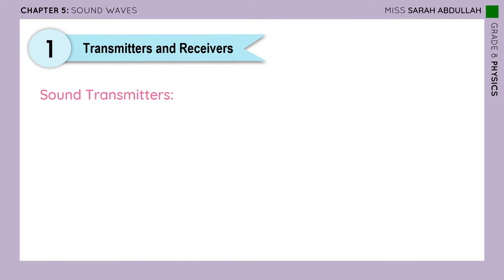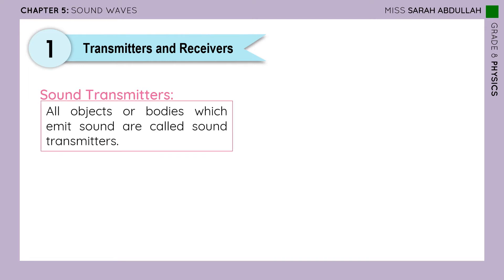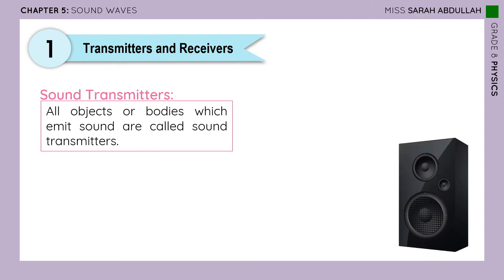So what are sound transmitters? They are the objects, the bodies that transmit — they emit sound, they give out sound. So all objects or bodies which emit sound are called sound transmitters, such as a speaker, a whistle.